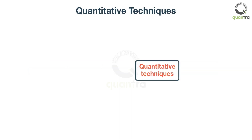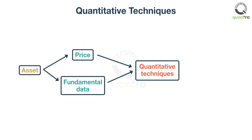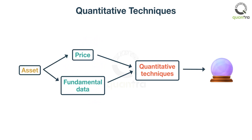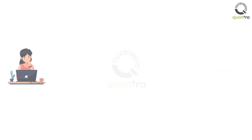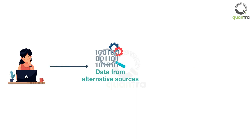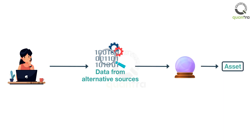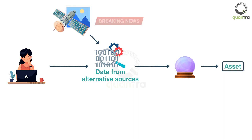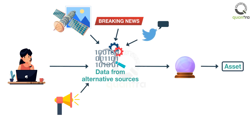Quantitative techniques use the price and fundamental data of an asset to analyze and forecast its future performance. However, they are not restricted to these data. Nowadays, traders are also turning towards data from alternative sources to get deeper insights and better forecasts into the performance of an asset. These data can include satellite images, news sentiments, opinions on social media, corporate announcements, earnings calls, and research reports.